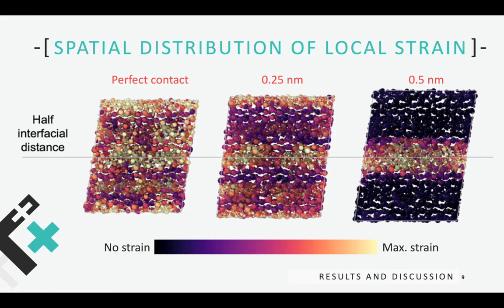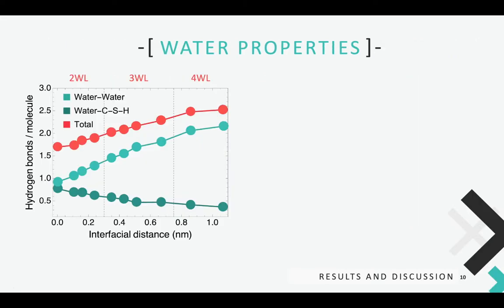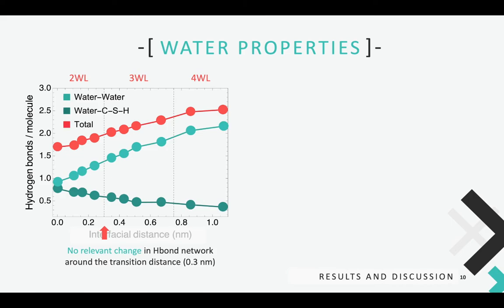Therefore, the interfacial distance and the water content play a central role in the cohesion and consequently in the mechanical performance under shear strain. For that reason, we studied the water properties as a function of the interfacial distance. The analysis of the hydrogen bond network reveals that as the interfacial distance increases, the number of hydrogen bonds per molecule between water molecules and the CSH decreases, while the number of hydrogen bonds between water molecules increases due to the larger water content in wider interfaces. Thus, the total number of hydrogen bonds per water molecule increases from 1.7 to 2.5. Nevertheless, there is no relevant change in the number of hydrogen bonds around the transition distance of 0.3 nanometers.